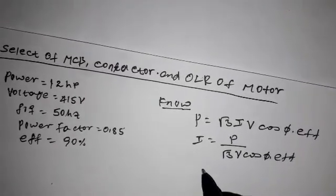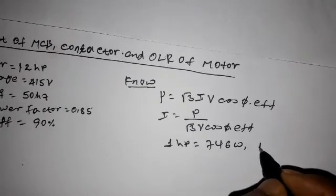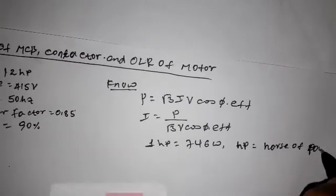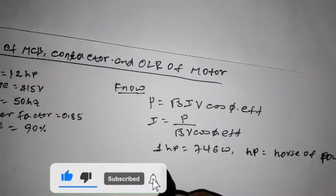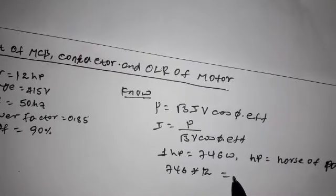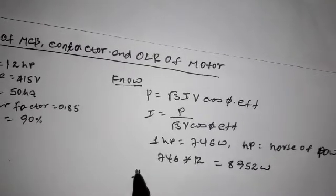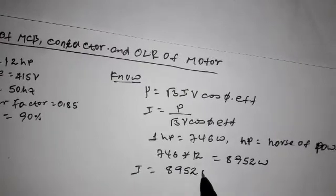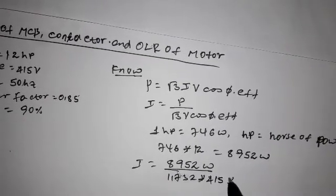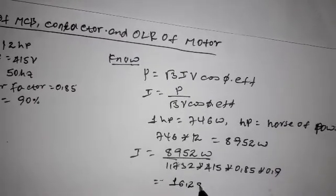Then, power is equal to 746 Watt. HP means horsepower. Now, 746 times 12 is equal to 8952 Watt. Current is equal to 8952 Watt divided by 1.732 times 415 times 0.85 times 0.9 efficiency. Current is equal to 16.28 Ampere.